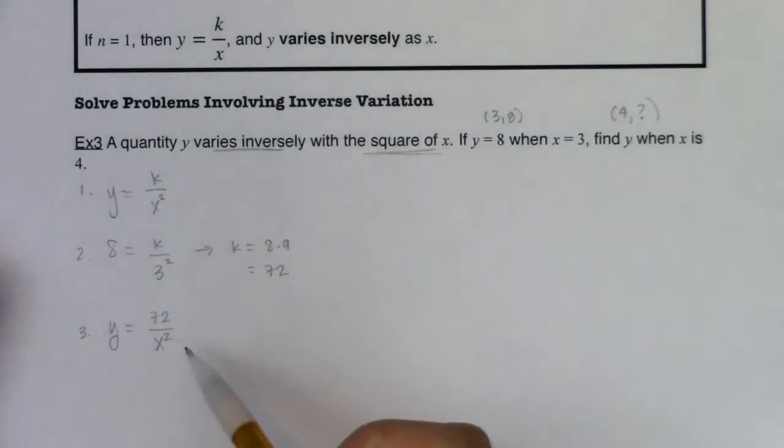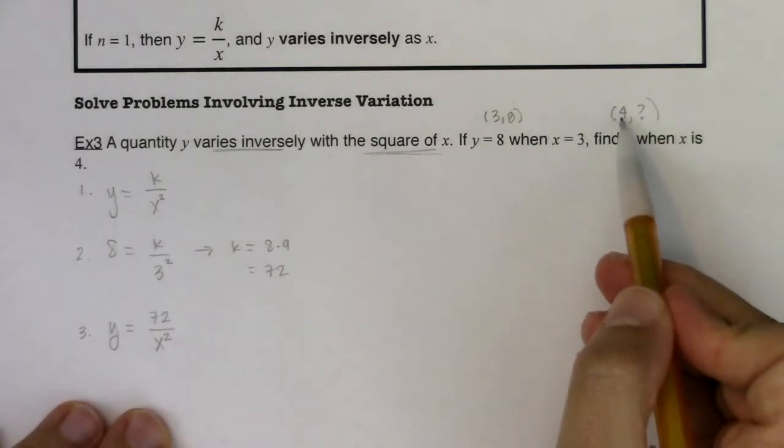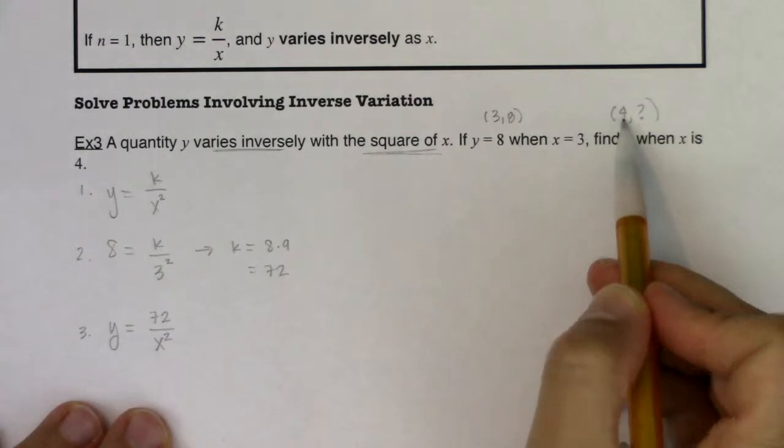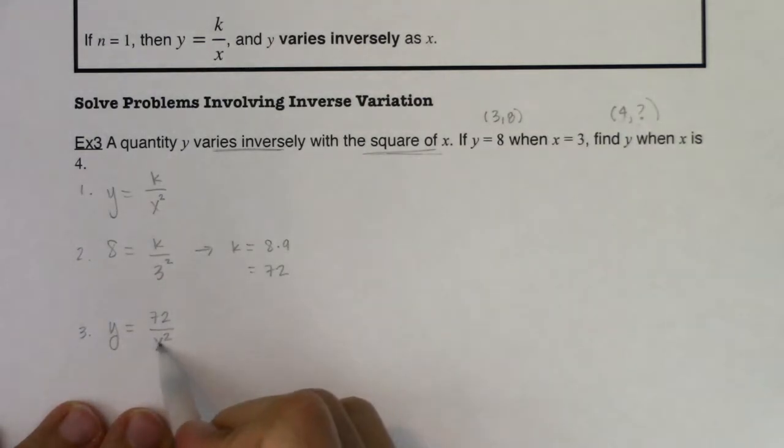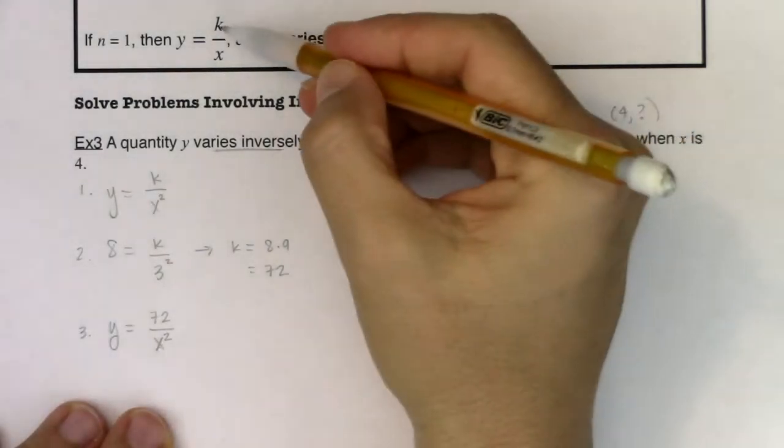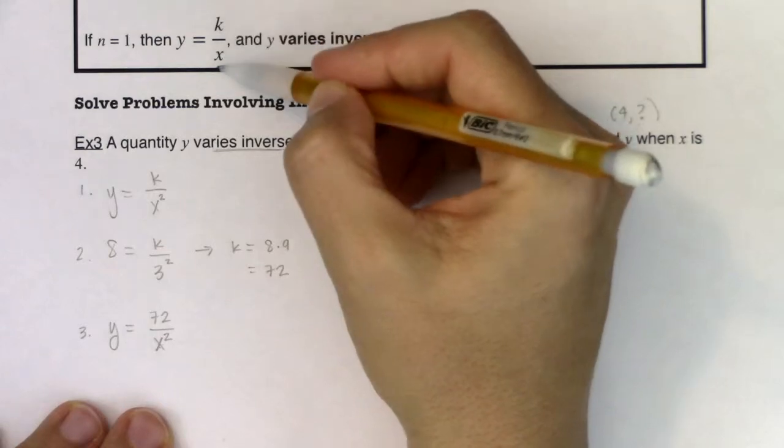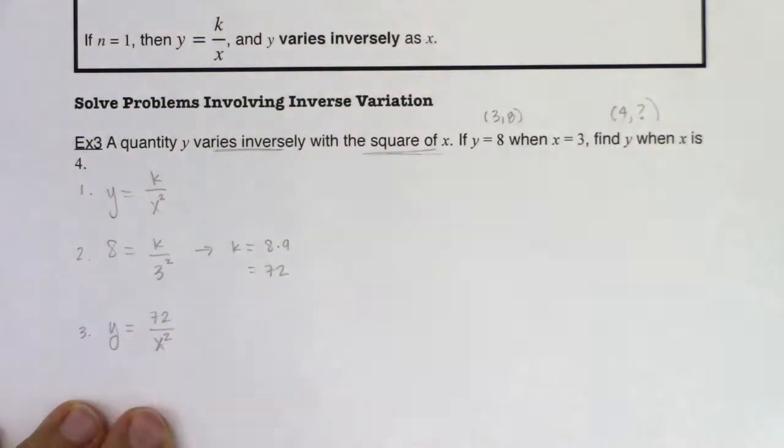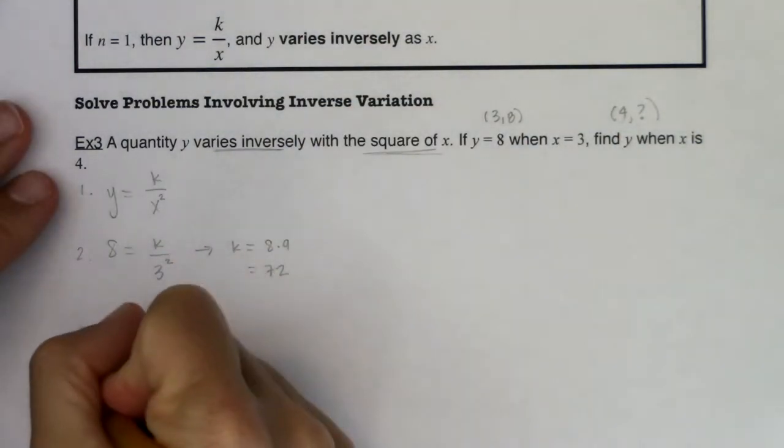And last but not least, once you have your particular variation equation, your particular model, substitute the remaining values and solve for the required unknown. So if we look at step four, it basically is now asking, well, plug in x being 4. And I really want to stress when you plug in 4, make sure you square it. Don't forget to square it. I think we get very used to just having k over x, not so much k over x squared. And we forget to square that number. So for step four, I'm going to say y is equal to 72 over 4 squared.